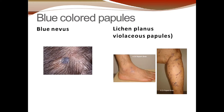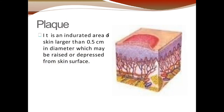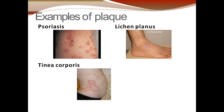Next is plaque. A plaque is an indurated area of skin larger than 0.5 centimeter in diameter, which may be raised or depressed from the skin surface. Indurated means hardened. Its diameter is usually more than 0.5 centimeter, and the plaque could be either raised or depressed depending on the type of disease.